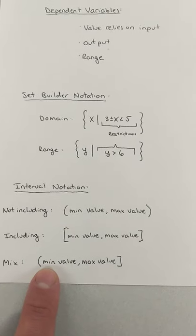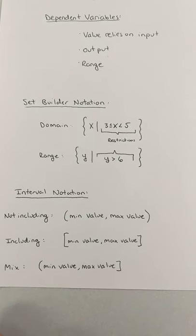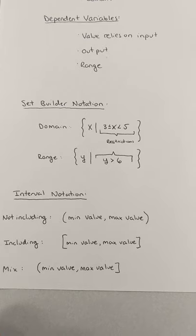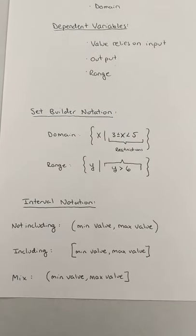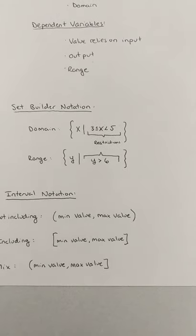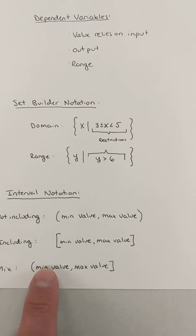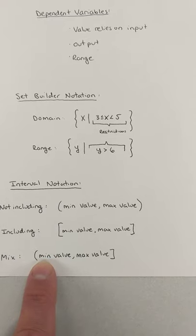We also have to use the parentheses whenever we're dealing with negative or positive infinity. Infinity is not a number, it's a concept, and since it's not a concrete number, we can never get to it. So whenever you're using infinity or negative infinity, you would have to use parentheses.